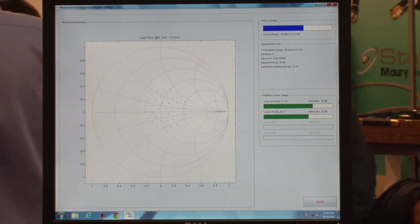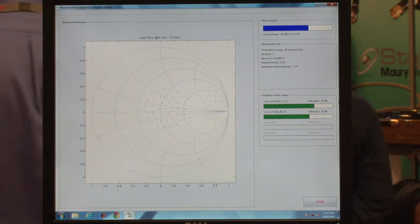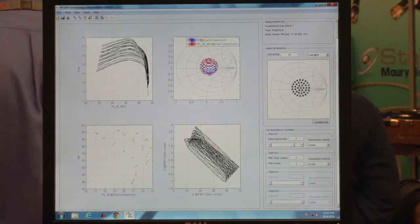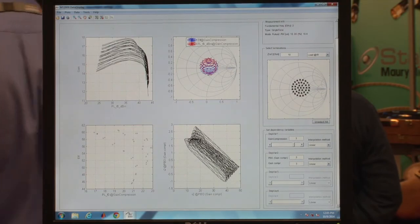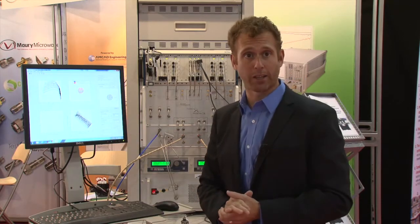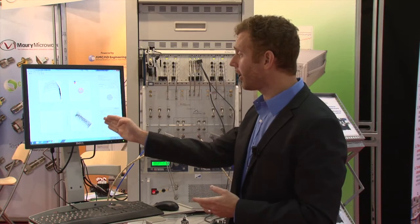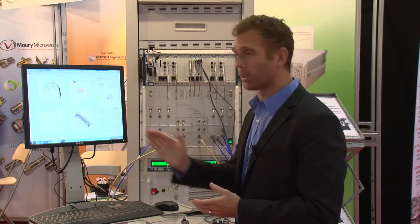In the 20 seconds that it took me to explain what we were looking at on the screen, we actually got this entire set of data. We got gain compression power sweeps at 30 different impedances over 20 different power levels. We got contours for efficiency and power. We've got the starburst that shows efficiency and power at a fixed gain compression. And we've even got non-linear VNA load lines.